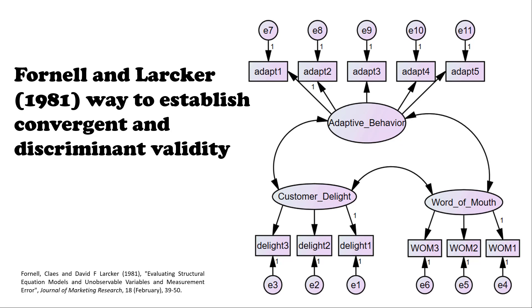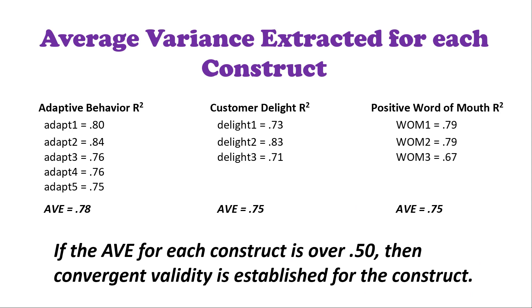Typically, validity is assessed in a confirmatory factor analysis. This is what it looks like in a CFA, where you've got your unobservables going to your indicators. Running that CFA, the first thing you want to do to assess convergent validity is to look at what they call the average variance extracted for each construct. For adaptive behavior, the CFA gives you the factor loadings for each one of those items on your unobservable construct.